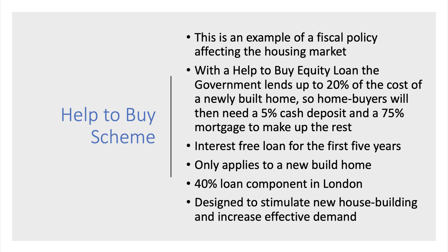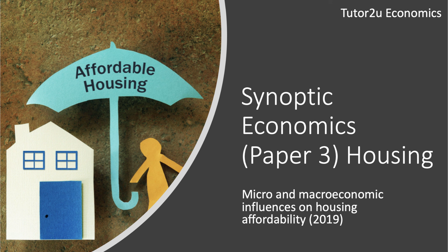Critics argue that Help to Buy has essentially driven up demand without a significant supply-side response in terms of new homes being built. There'll be a separate video on micro and macro policies designed to improve housing affordability. Remember, whenever we say micro and macro, we're thinking in a synoptic way.